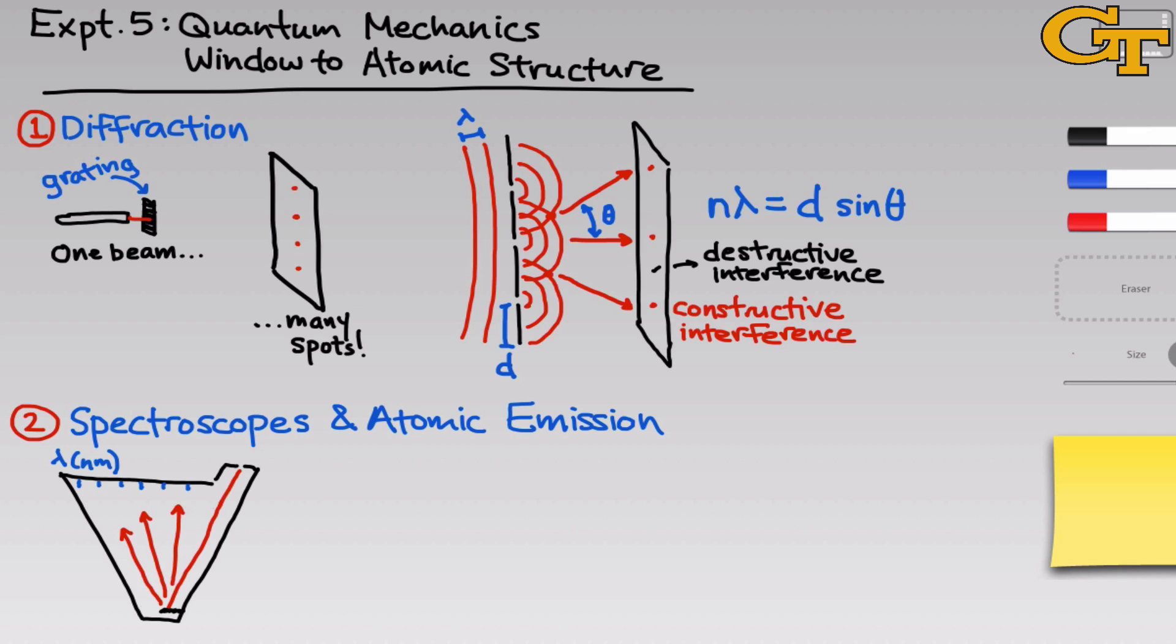Different wavelengths bounce off the grating, essentially, at different angles. The light gets reflected back onto the scale inside the spectroscope. So if you look at the scale, you can see the wavelengths that compose the original input light.